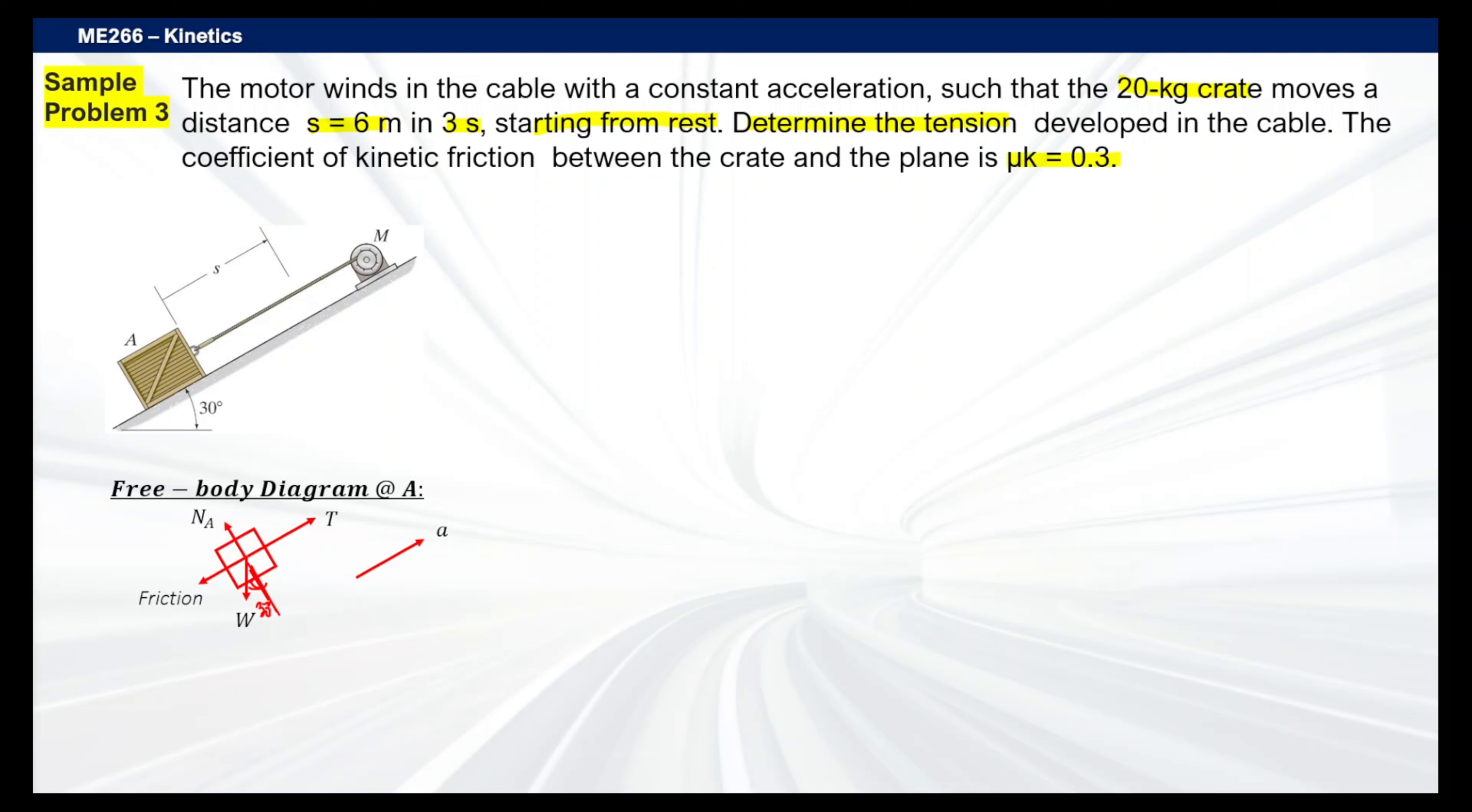Using our formula, S equals initial velocity times time plus A T squared over 2, we can isolate this since most of it is known. Initial velocity is zero, our S is 6 meters, our time here is 3 seconds, and A is unknown. That will be 4 over 3 meters per second squared, or if we're going to be precise about it, that's about 1.3333 meters per second squared.